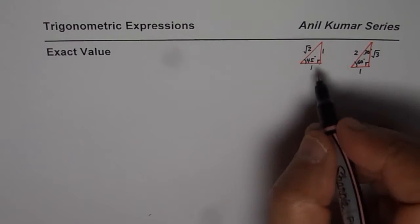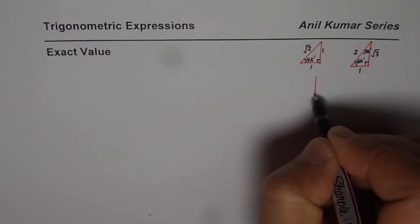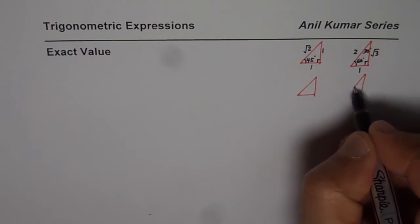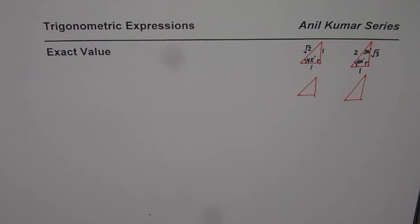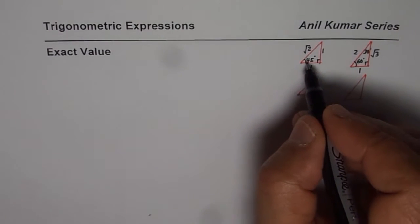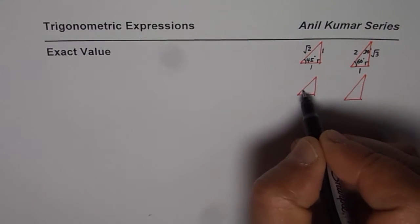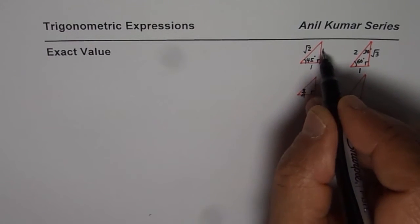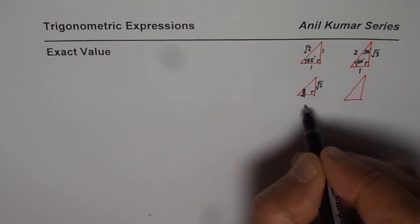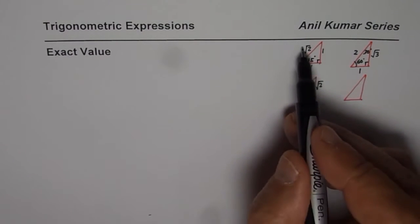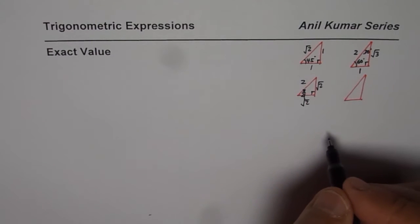At times we prefer to use these values. So let me make another set of these triangles. Now what I will do here is I will write radians instead of degrees so that it becomes kind of versatile. 45 degrees could be written as pi by 4, and instead of 1, 1, square root of 2, at times we also use square root of 2, square root of 2. That is multiply each side by square root of 2, right?